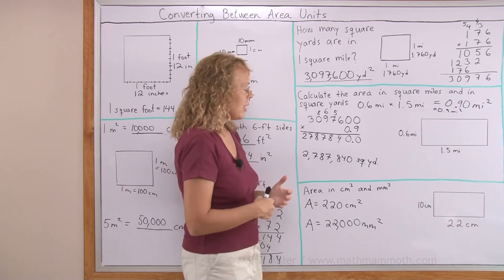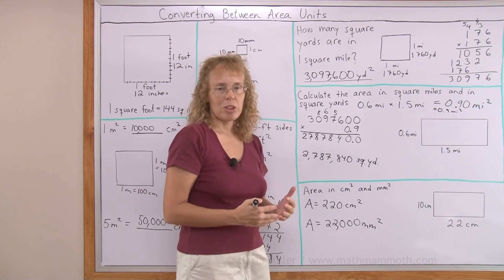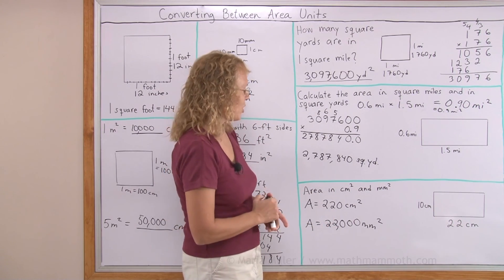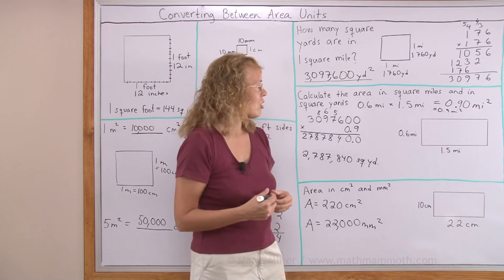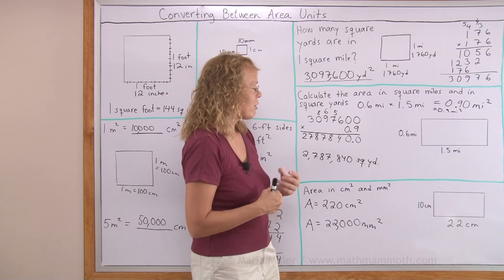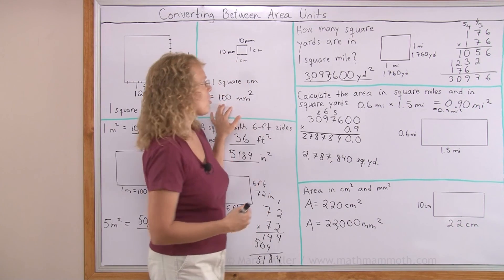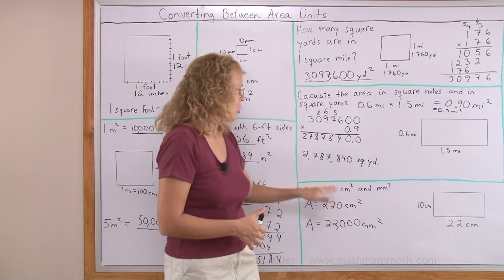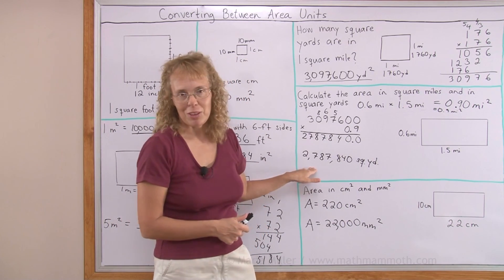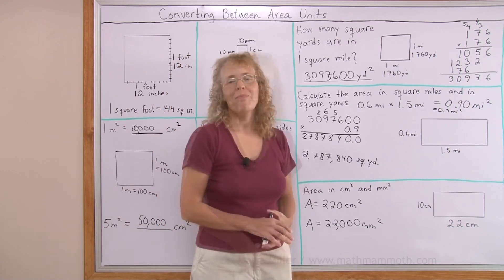So in general, in area conversions, especially if you have a rectangle, you can do it in two different ways. And whichever way is easier really depends on the context and what you have available, if you have conversion factors already calculated or not. And if you have metric units or customary units, it's always more difficult with customary units. I hope this was helpful.